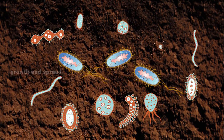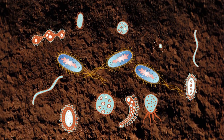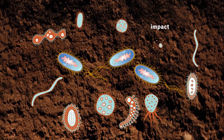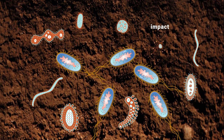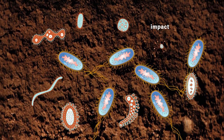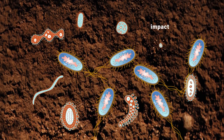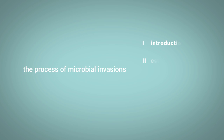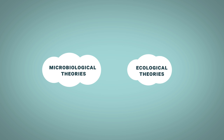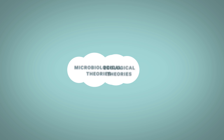This growth leads us to the last phase, the impact, during which the invader might affect the resident community — for instance, by displacing indigenous microbial species. In our review, we examine each phase of the invasion process in more detail, and we weave what we know so far about this phenomenon into the current microbiological and ecological theory.